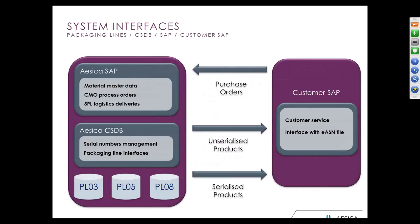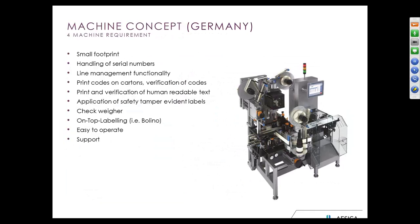This shows a typical interface design with one of our customers, with all affected systems at ASECA on the left-hand side and customer systems on the right. More details about the integration aspects of our serialization capabilities will be covered by my colleague Ralph in the next webinar in this series on the 24th of January next week. For the machine concept, it was very important to have a small footprint with integration of line management functionality, print and verification devices, a tamper-evident label applicator, the possibility to apply further labels or vignettes, easy operation, and highly reliable supplier support.